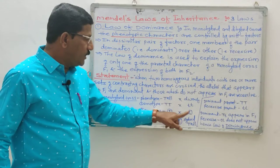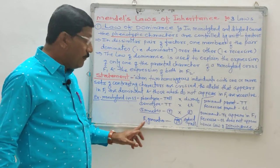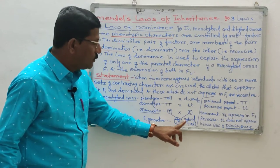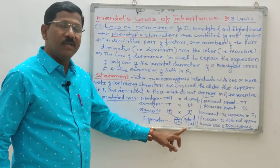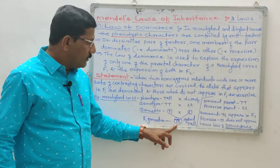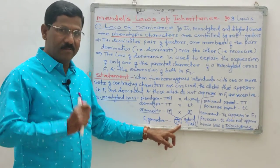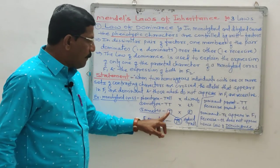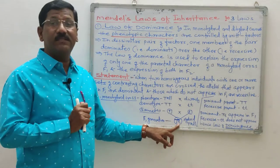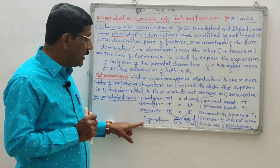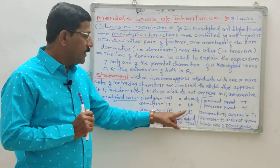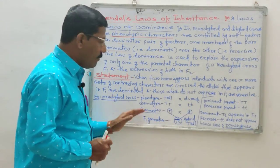In the F1 generation, capital T small t appears — that means hybrid tall. Capital T, the dominant character, always overlaps the recessive character small t. In the F1 progeny, tall — the dominant character — always appears, while the recessive character is suppressed and does not express.